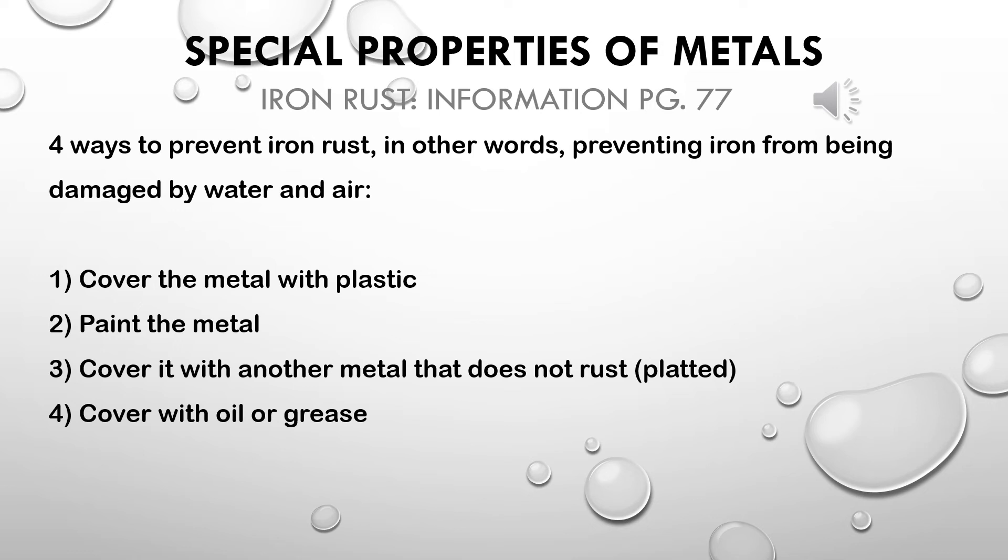The four ways to prevent metals from rusting are: first, cover the metal with plastic; second, paint the metal; third, cover it with another metal that does not rust — i.e., plate it; and fourth, cover it with oil or grease.